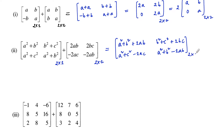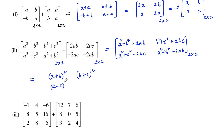Which is again a 2 by 2 matrix, equal to: A² plus B² plus 2AB is (A plus B) whole square; B² plus C² plus 2BC; A² plus C² minus 2AC is (A minus C) whole square, or (C minus A) whole square. So this is the sum of the two matrices, which is again a 2 by 2 matrix.